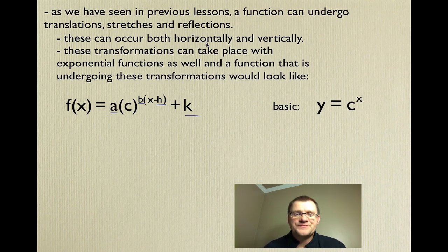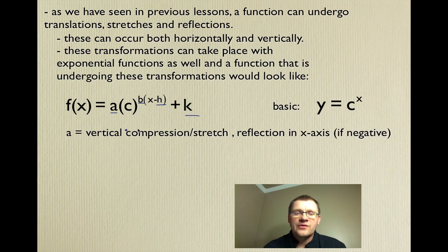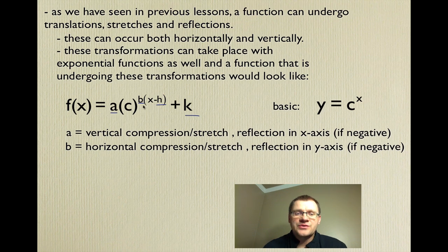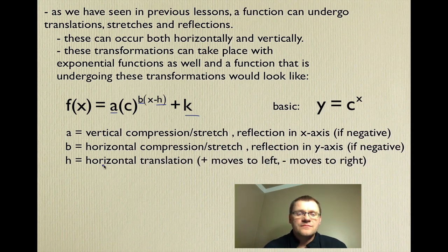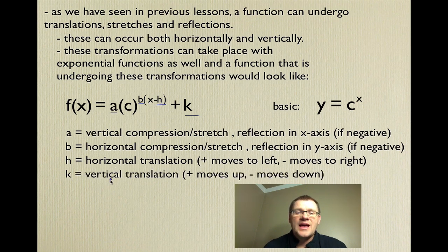Each of the letters a, b, h, and k provides one transformation — a translation, stretch, or reflection. The value a is a vertical compression or stretch, and if negative, it's a reflection in the x-axis. b is a horizontal compression or stretch, and if negative, a reflection in the y-axis. h is a horizontal translation — x plus h moves left, x minus h moves right. k is a vertical translation, moving the function up if positive and down if negative. They use c as the base of the exponential function.